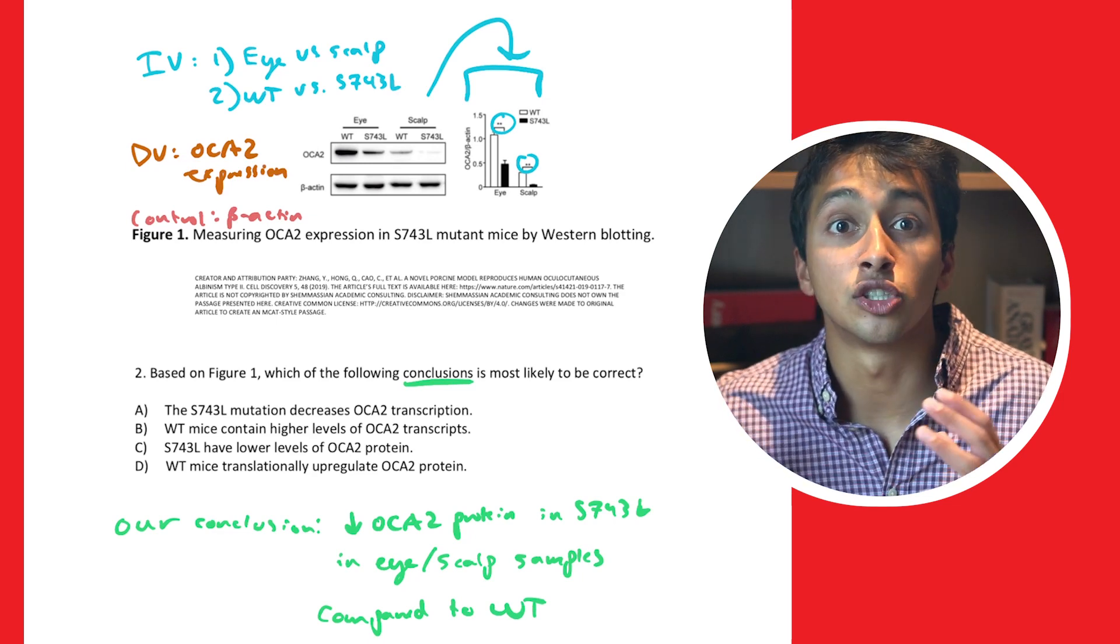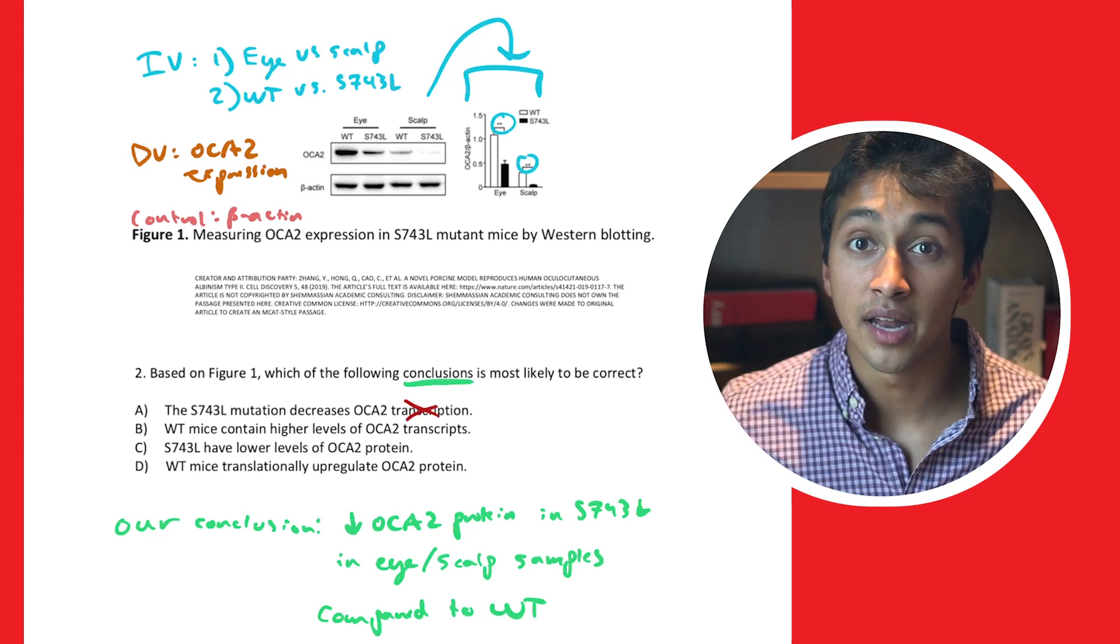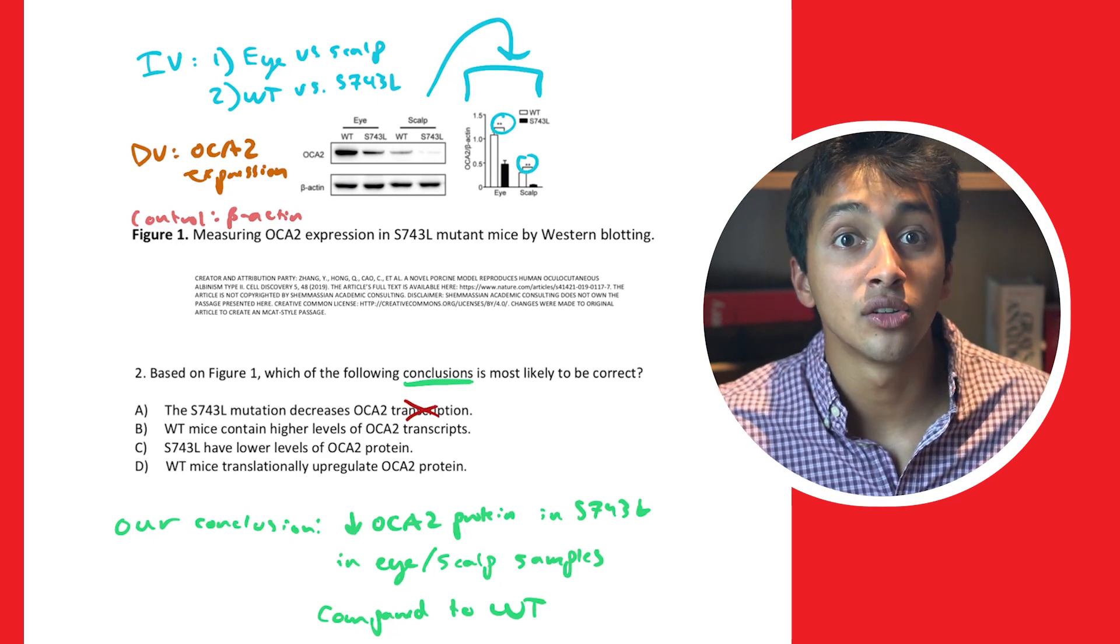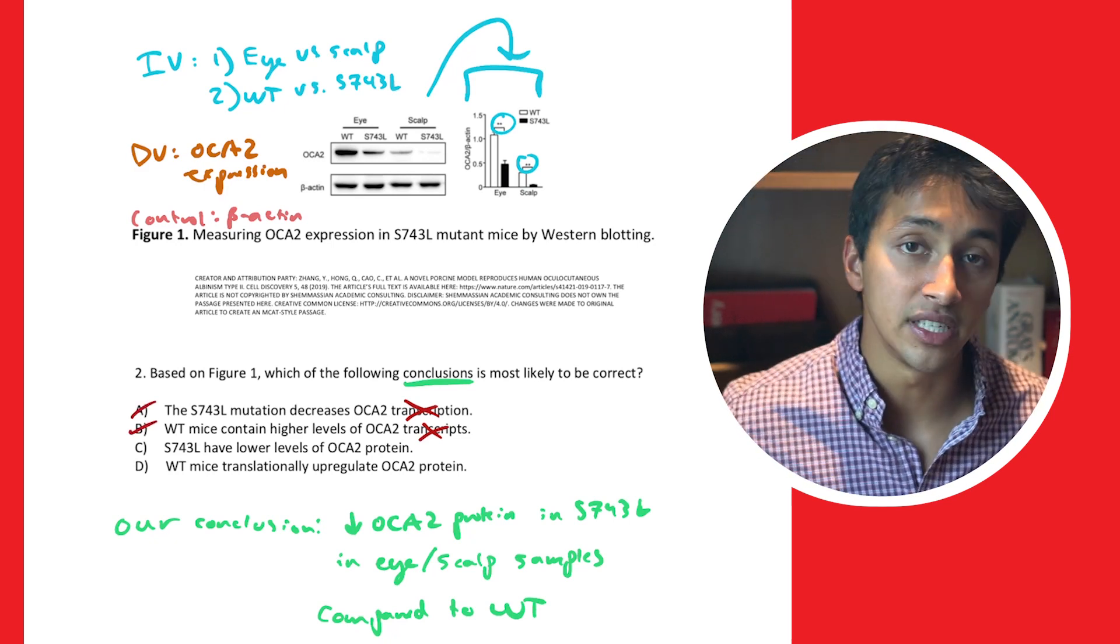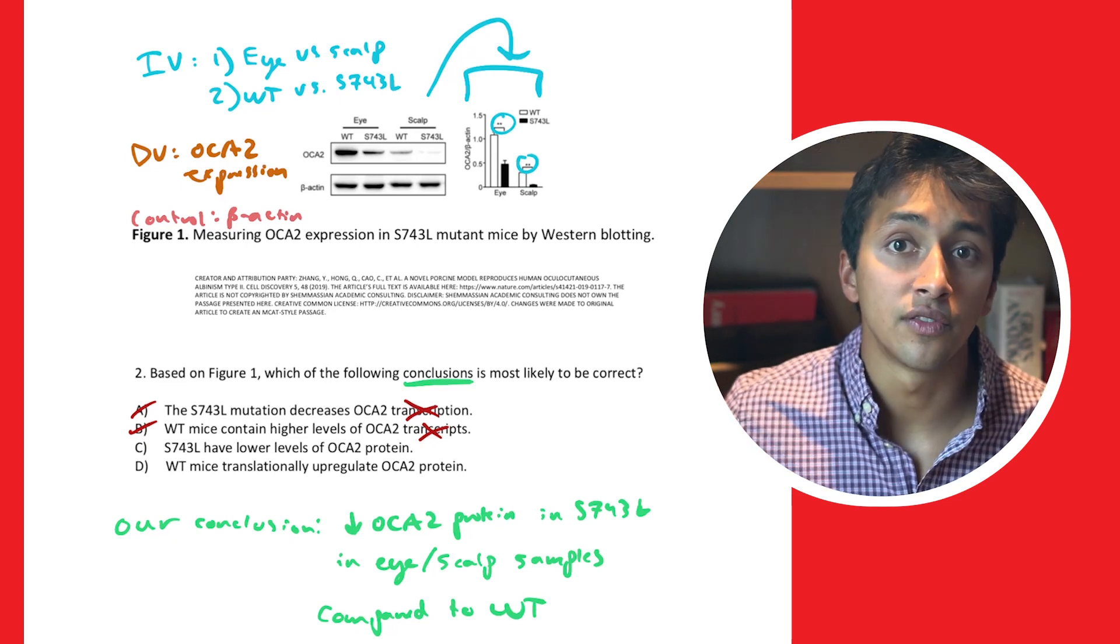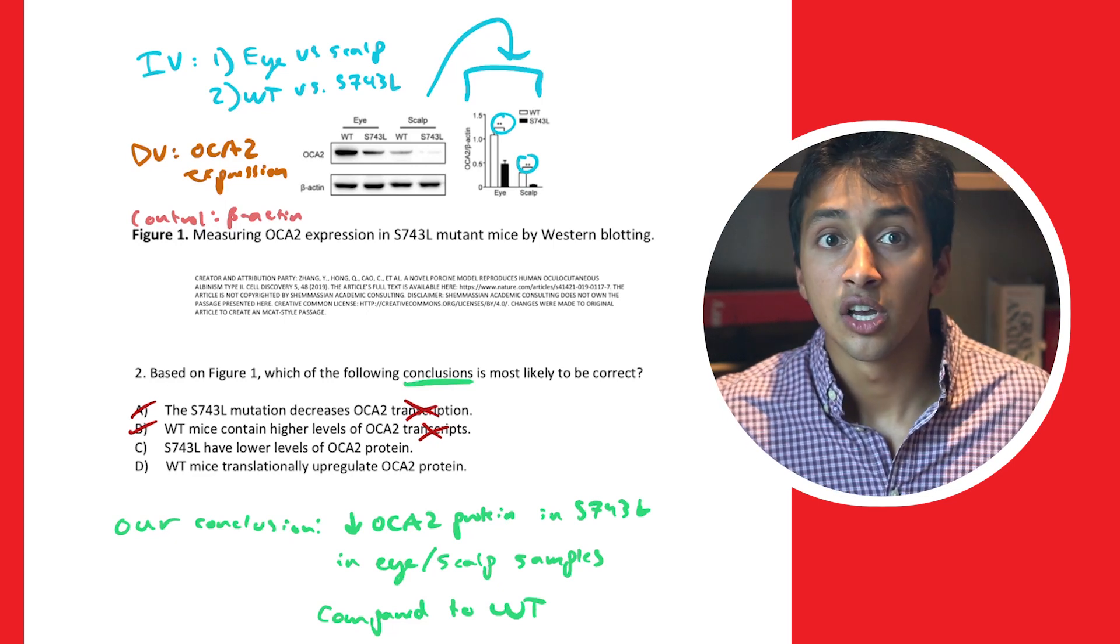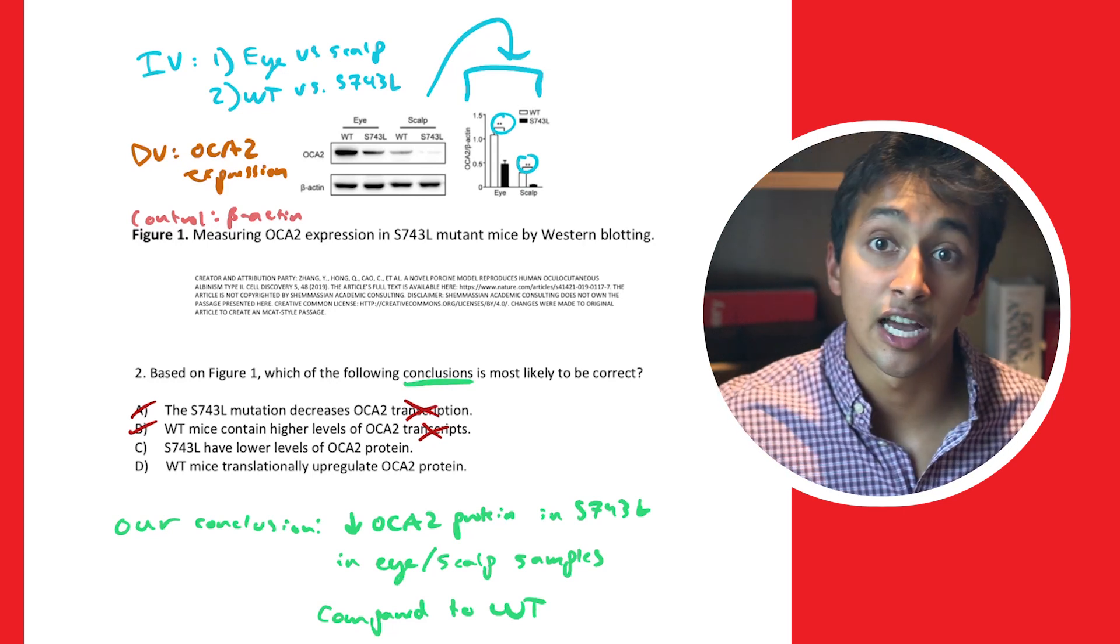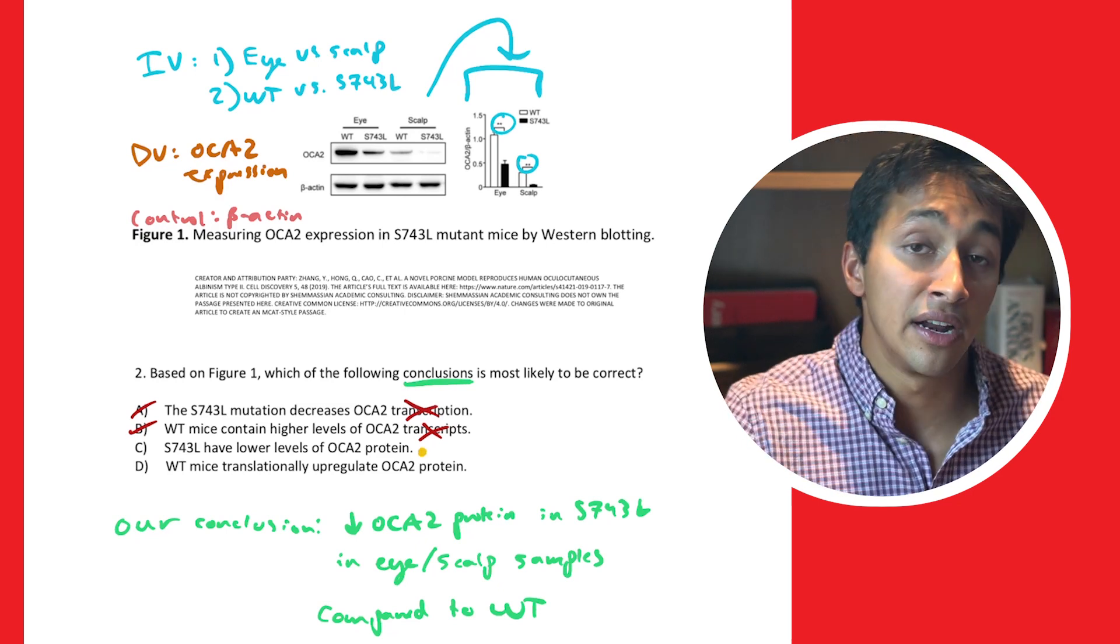Answer choice A focuses on the transcription of DNA to RNA. Information about transcription can't be provided with a Western blot. Similarly, when we read answer choice B, wild type mice contain higher levels of ACA2 transcripts, we can quickly eliminate the answer since it's talking about RNA levels and not protein levels. Choice C reads, S743L have lower levels of ACA2 protein. This actually aligns nicely with the conclusion that we see statistically significant lower ACA2 protein expression in the S743L mutant condition in both the eye and scalp samples when compared to wild type. The answer choice confirms the prediction we had made after analyzing that Western blot.